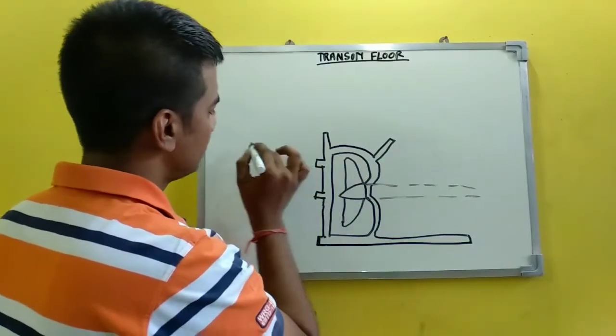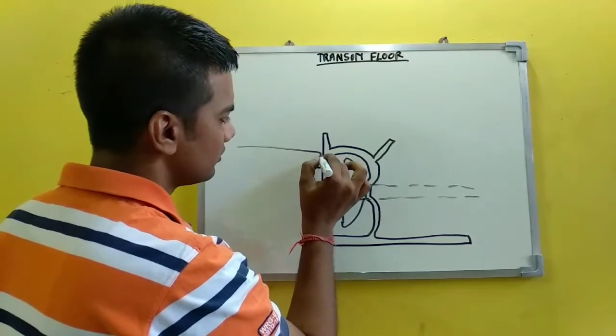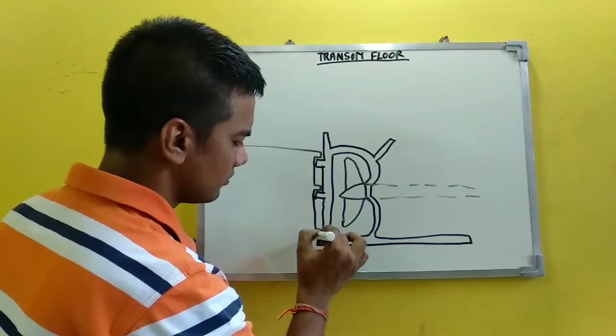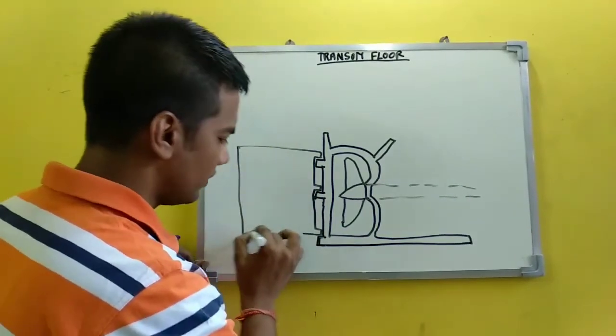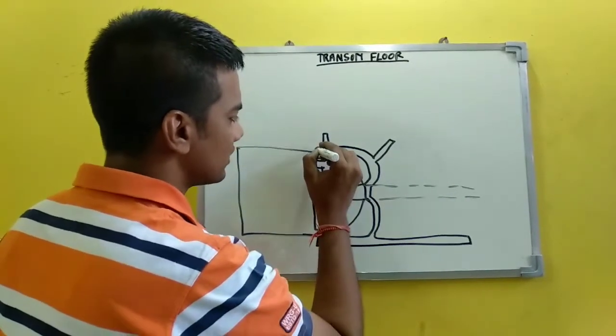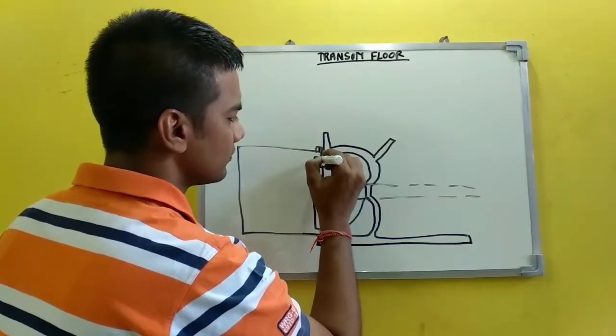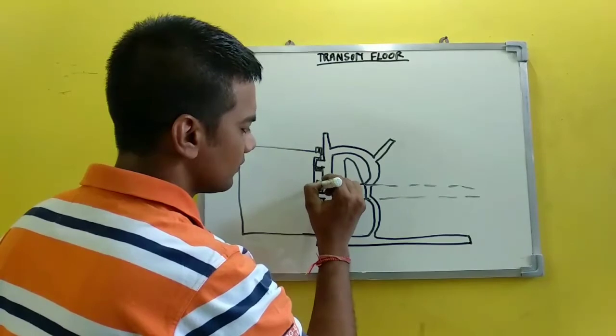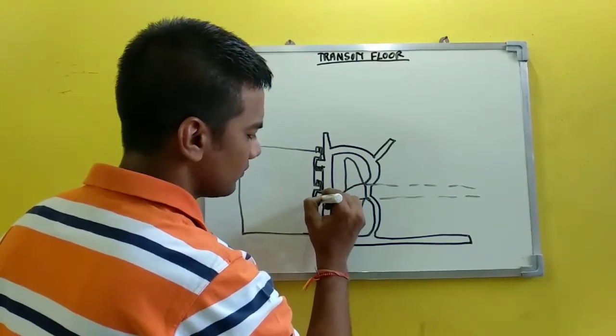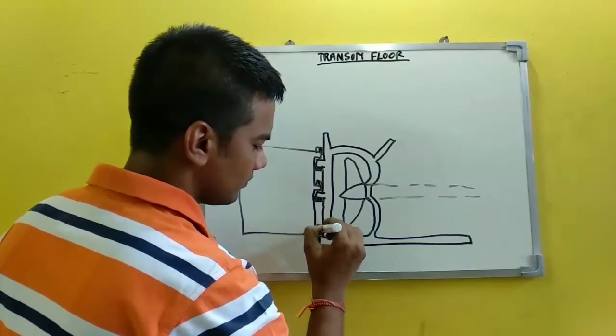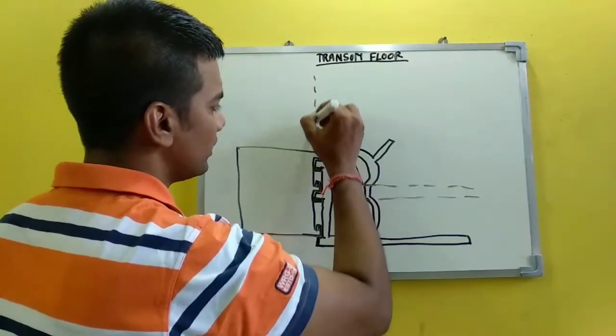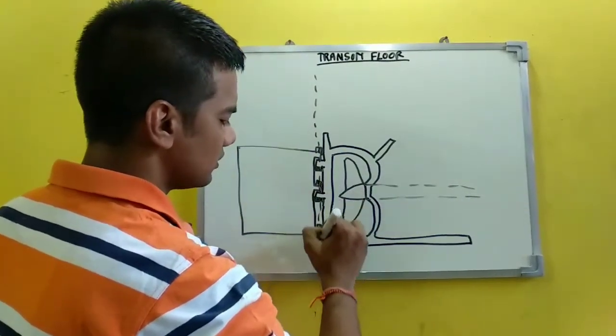Let's draw a rudder over here. So we have a rudder over here. Let's connect this rudder. This is an important axis to keep in mind.